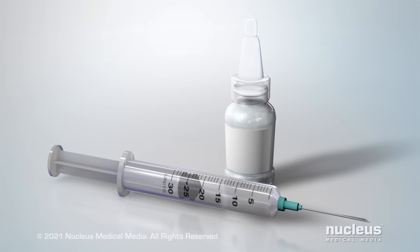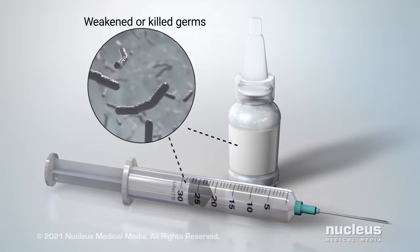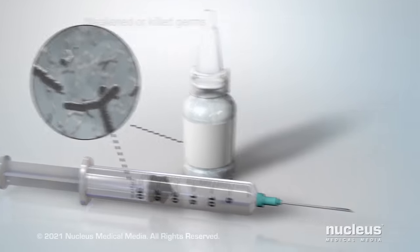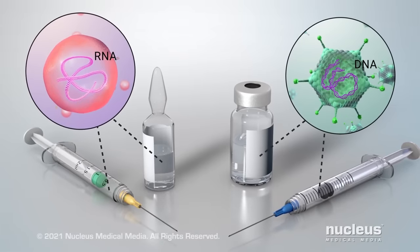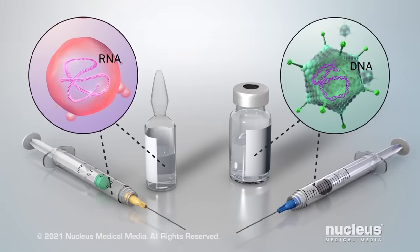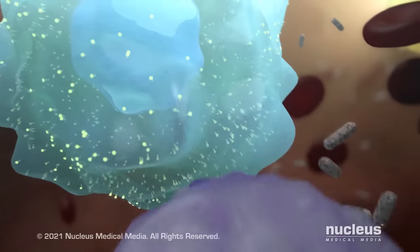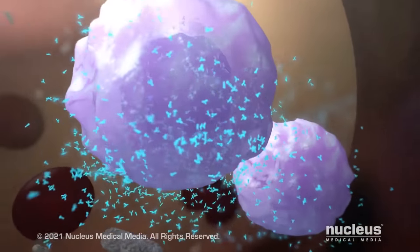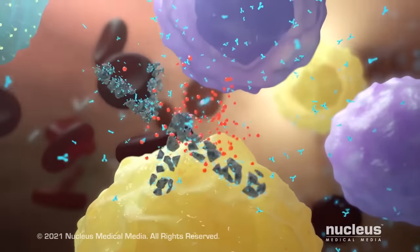Vaccines can protect you from getting these diseases and their harmful symptoms. Vaccines often contain a small amount of weakened or killed germs. But some contain genetic material, such as RNA or DNA, that provide instructions for your body's own cells to make the germ's antigen. Usually, you receive a vaccine as a shot. Inside your body, the germ particles in the vaccine teach your immune cells to attack these germs. This process doesn't make you sick, but it does cause your body to make memory cells and antibodies for those germs.